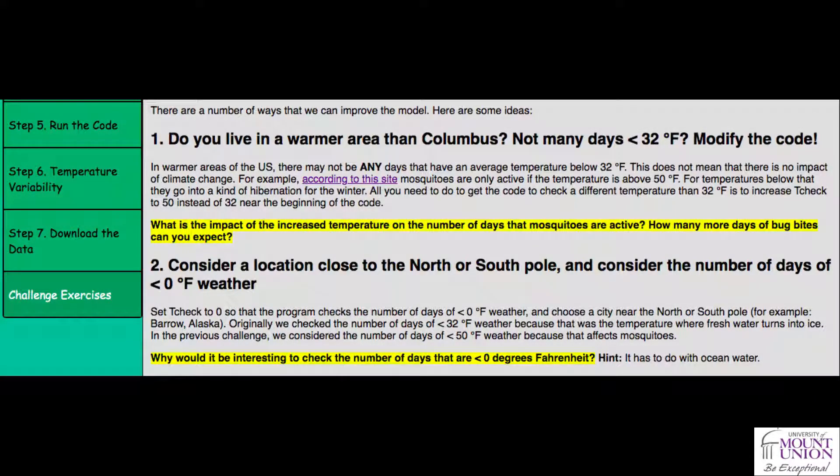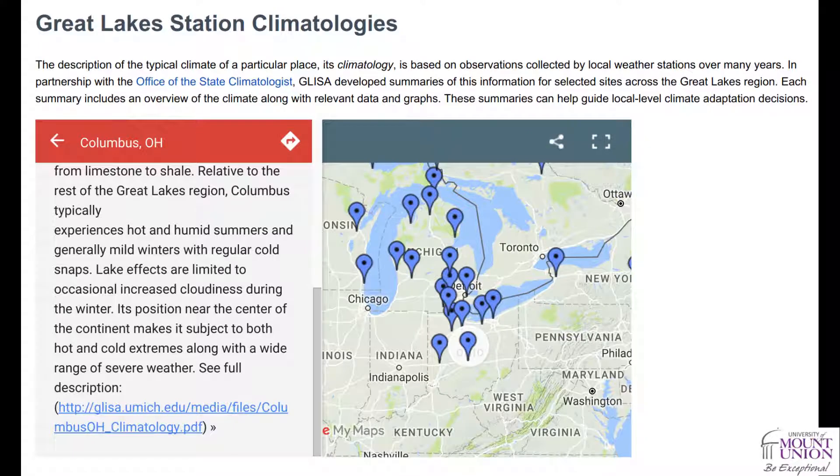We address this in challenge exercise number one. We'll cover that later, but for now, pick a different city from the Great Lakes region that's colder, and you can experiment with the code in challenge one.